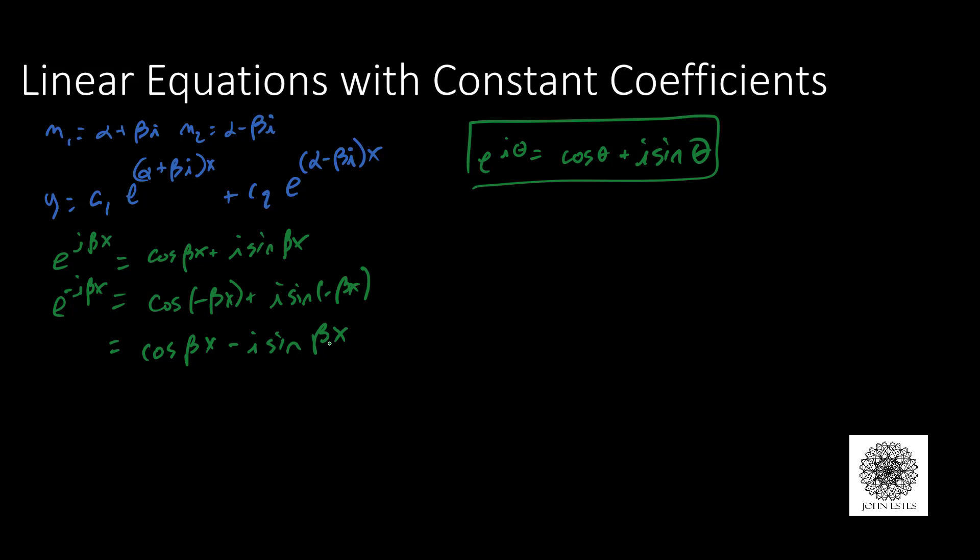The reason this is helpful is because I can find particular instances of my general solution that'll actually help me reduce to a different version of our general solution that only deals with real numbers. Let's let c1 and c2 both be one.